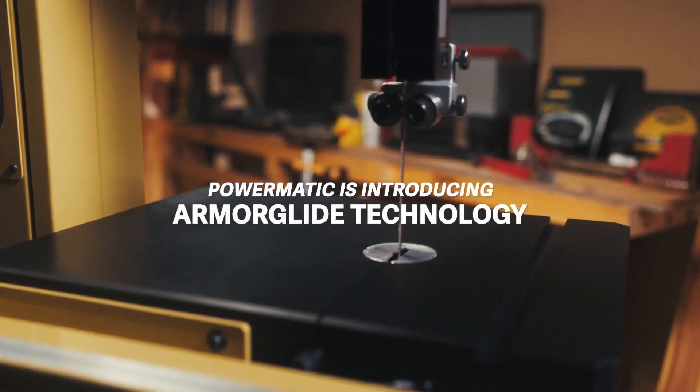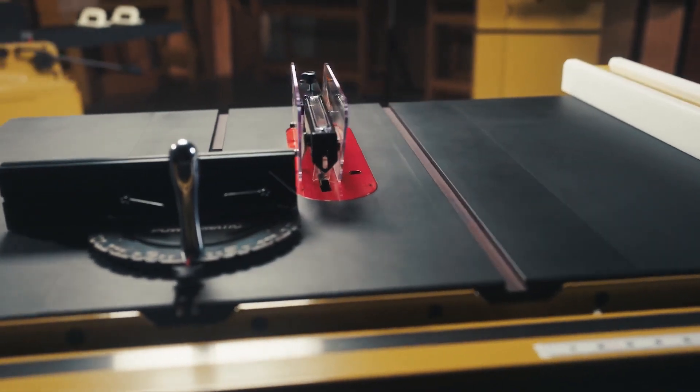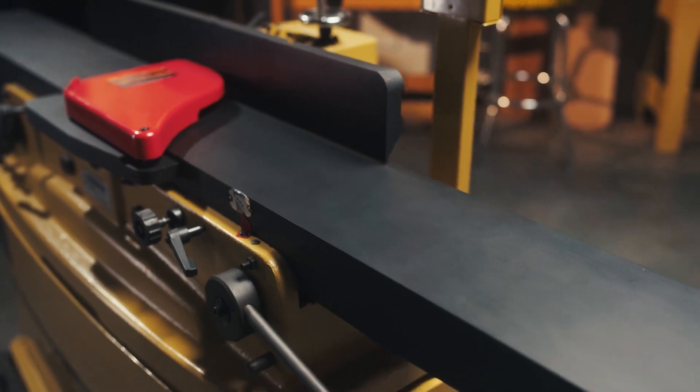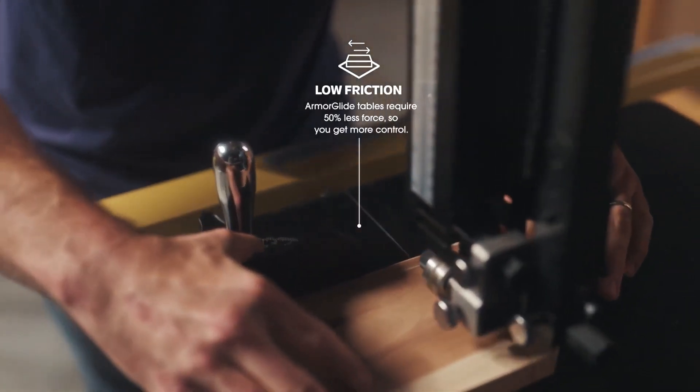Powermatic is introducing Armorglide technology. This industrial grade coating on bandsaws, table saws, and joiners requires less force, giving you more control as you easily maneuver the wood across the table.